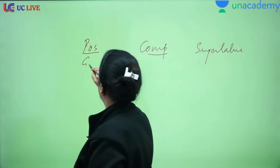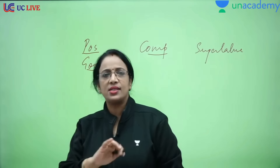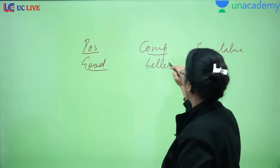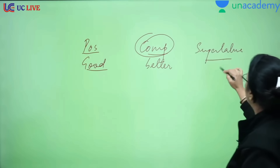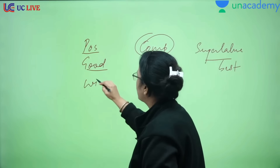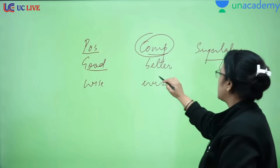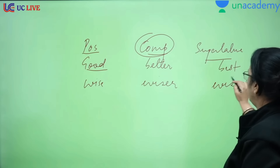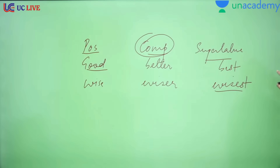I wrote 'good'. Good is positive. Better is the comparative. Best is the superlative. Similarly, 'wise' is positive, 'wiser' is comparative, and 'wisest' is superlative. So: good, better, best.